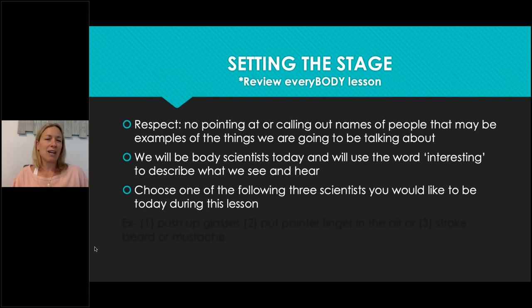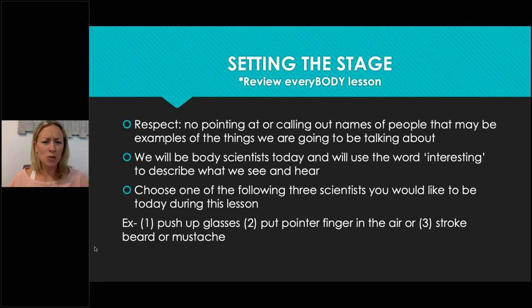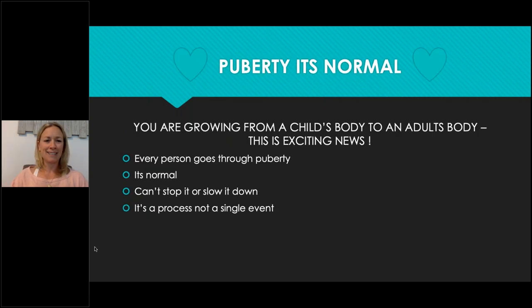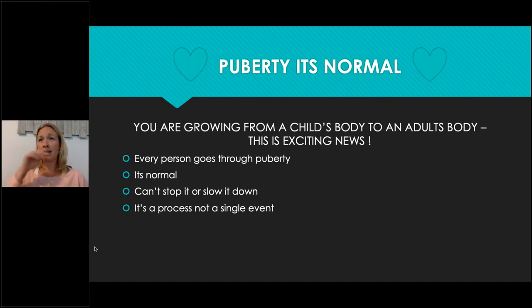I ask students what kind of scientist they want to be — the one who pushes up their glasses, the one who says 'interesting,' or the one who strokes their beard when they find something interesting. Then they choose which one they want to be. Puberty is completely normal — you're growing from a child's body to an adult body. Every person goes through puberty; you can't stop it, slow it down, or speed it up. Students sometimes think they'll wake up tomorrow as an adult — it's a slow, gradual process, though some bodies go quicker in certain areas, and that's perfectly normal.